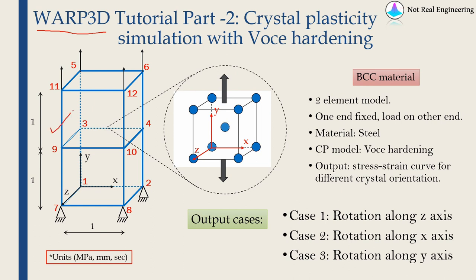Today we are going to solve this simple example. Over here we have only two elements. The red numbers indicate node labels and dimensions are also given. All the dimensions will correspond to this set of units. We are going to use something called Voce hardening in this example. This is just a two element model. One end of this bar is fixed and we will apply load on another end. These four nodes at the bottom are fixed and we will apply displacement boundary condition on the top four nodes. I am going to use material as steel. CP model is Voce hardening. And we are going to obtain a stress-strain curve for different crystal orientations.